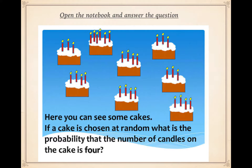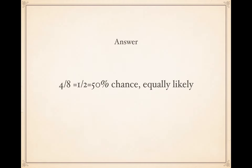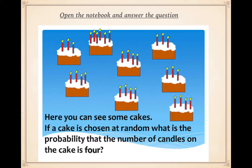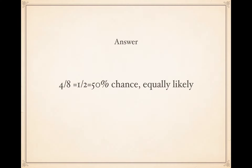The answer is four over eight, or a half — 50 percent chance of picking the cake with four candles. There are four cakes with four candles, and the other cakes have either three or six candles. The chance is 50 percent — equally likely. We just don't know, but the chance is right in the middle.